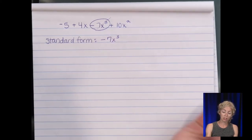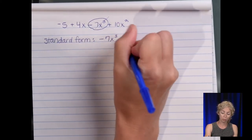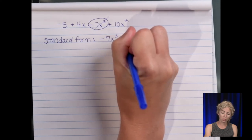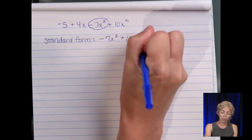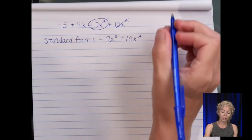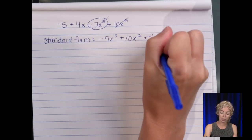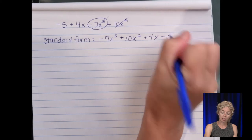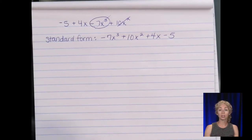And then the next exponent is the two. So three, two, one in order of largest to smallest. So plus ten x squared. Remember include the sign in front. Plus four x and then the minus five. So that polynomial is in standard form. And you don't necessarily have to have all of your answers in standard form but only when it asks you.